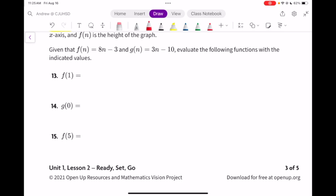f(n) has the rule 8n minus 3 and g(n) has the rule 3n minus 10. So problem number 13, f(1). That means to take the rule 8n minus 1 and replace the n with a 1. Evaluate using PEMDAS. That's 8 minus 3. The answer is 5.